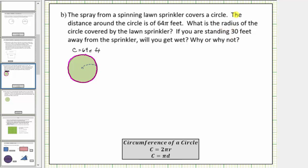Well we can determine the radius of the circle by using the circumference formula because we know the circumference is equal to sixty-four pi feet. We'll use the circumference formula, C equals two pi r, because we are trying to determine the radius.